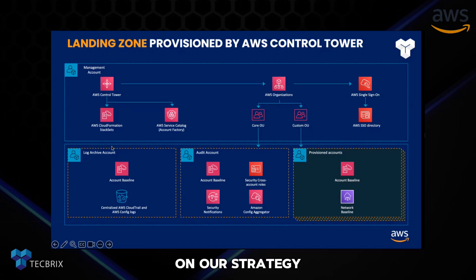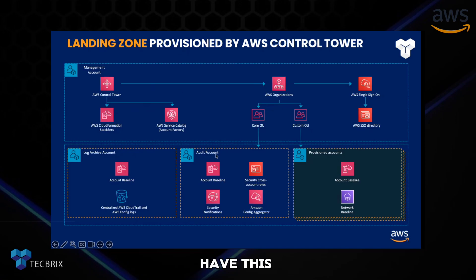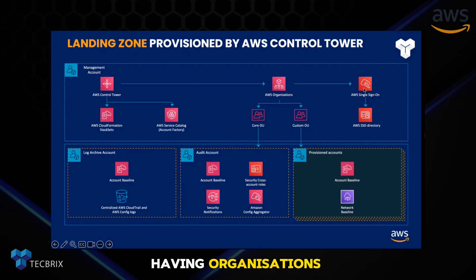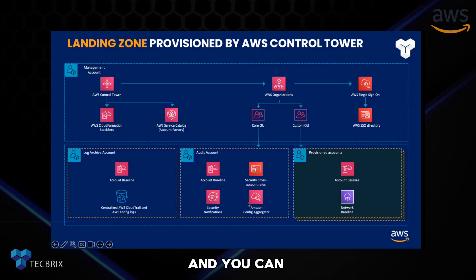So it depends on our strategy, how we want to build this structure of our organization — maybe organized as per our business needs, or as per our application needs, or as per our governance model. This is the basic structure: one management account, organizations, SSO, SSO directory, and a log archival account. All the other AWS accounts will be sending logs to this centralized logging account. You can have an audit account as well, where you can have security notifications from all these different accounts in a centralized place, and you can access all the other accounts.